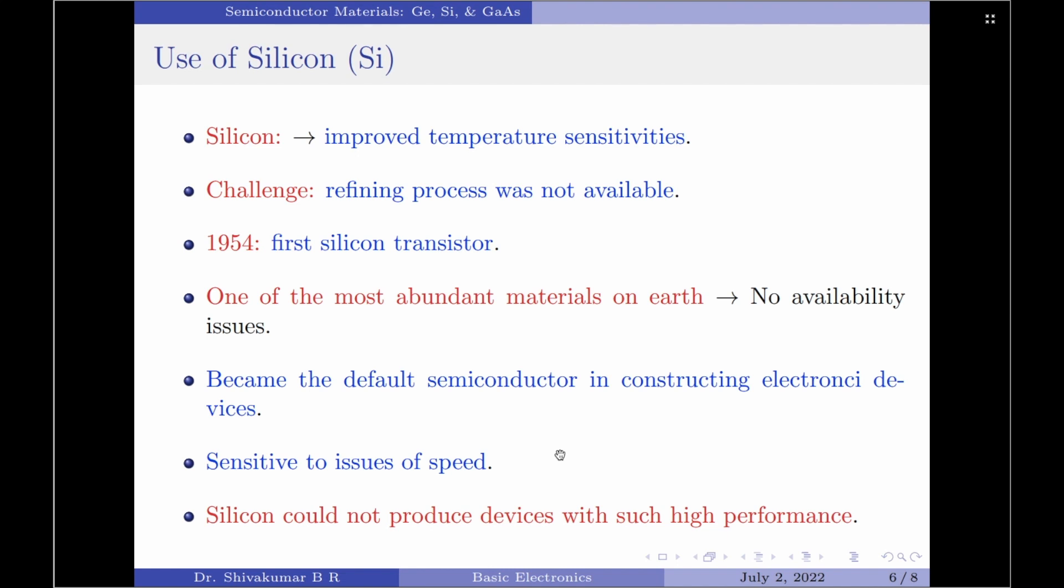With that sorted, silicon became default semiconductor in constructing electronic devices and the manufacturing and design technology improved steadily through the following years to the current high level of sophistication.